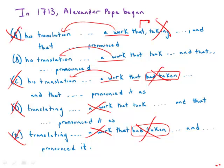Also notice that answer choices C and D have an extraneous 'it' as a direct object. In the clause 'Samuel Johnson pronounced it,' the 'it' is already referring to the direct object, so we don't need the redundant 'it' — that's another problem with those two. By far the best answer here is B.